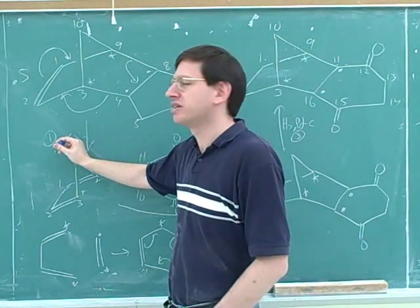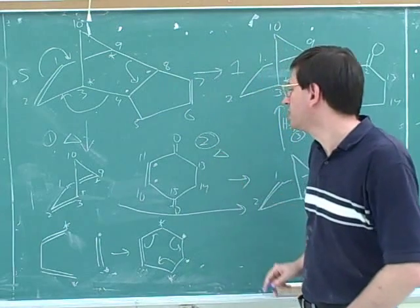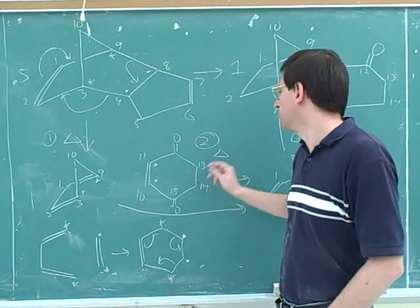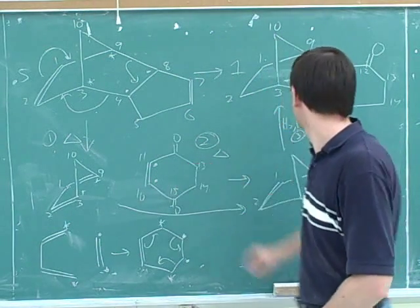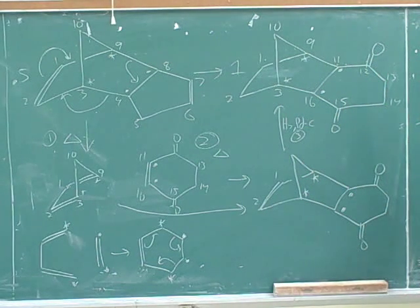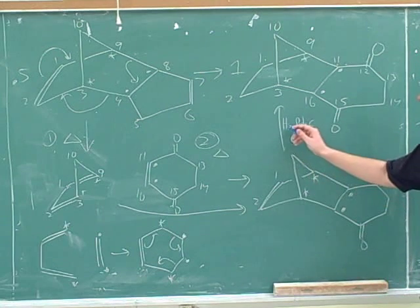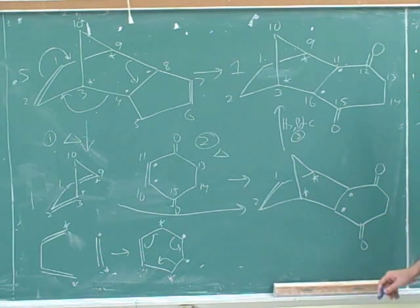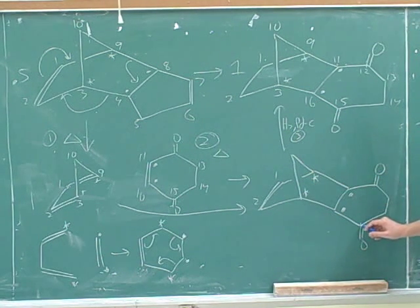Step one, add heat. That gives you the retro Diels-Alder. Step two, add the new dienophile with heat to get a forward Diels-Alder. And then to get rid of this double bond, we can do hydrogenation. And under normal conditions, only alkene double bonds hydrogenate. Carbonyl double bonds don't hydrogenate. So we won't need to worry about destroying these.